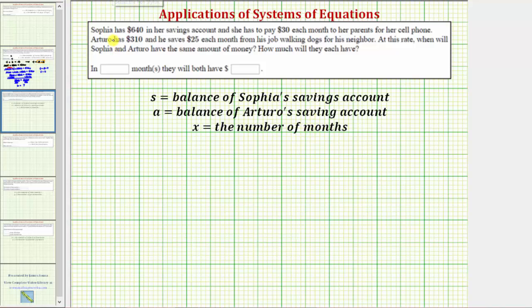Now we'll write an equation for the balance of Sophia's account as well as Arturo's account. So for Sophia's account, S, the balance, is equal to the starting balance of $640. And then because she's paying her parents $30 each month and x is the number of months, the balance would be $640 minus 30 times x or minus 30x.